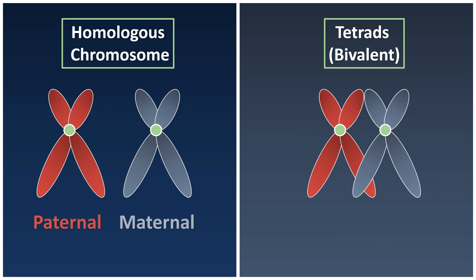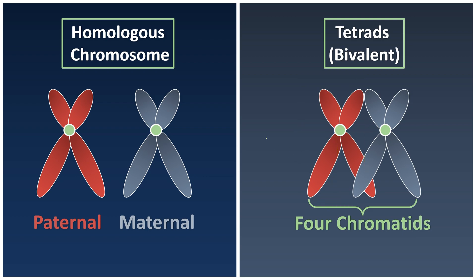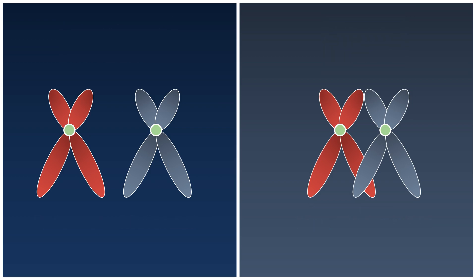And they will try to cross over to exchange their information. So whenever they cross together, this is what we call a tetrad, and we eventually have four sister chromatids. So we have a pair of homologous chromosomes, which means we have two chromosomes — the homologous chromosomes — and the four sister chromatids are considered as a tetrad.